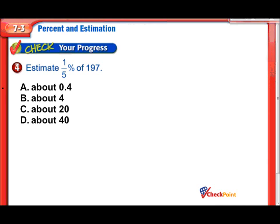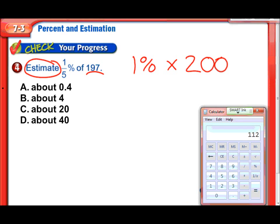One-fifth of a percent of 197. This is a unique problem. Instead of working directly with one-fifth percent, first find one percent. We're allowed to round, so let's call 197 just 200. One percent of 200: enter 0.01 times 200 on the calculator — that gives us 2. The trick: to find one percent of any number, just move the decimal two places to the left.